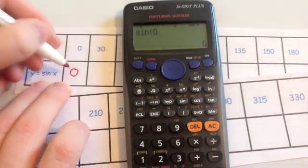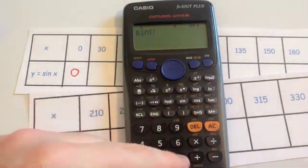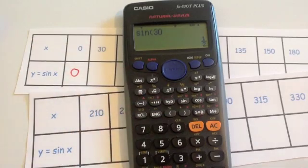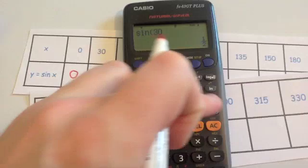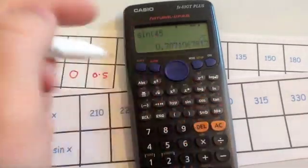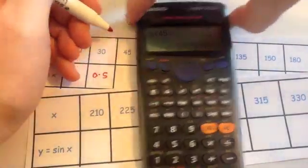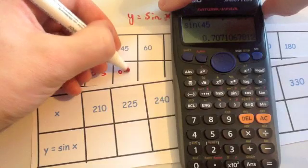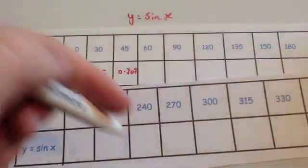So the sine of 0 is 0. The sine of 30 is a half, 0.5. The sine of 45, which would be 0.7071 and so on. Let's just do these to three decimal places, 0.707. And carry this on the whole way across to get all the values in the table.